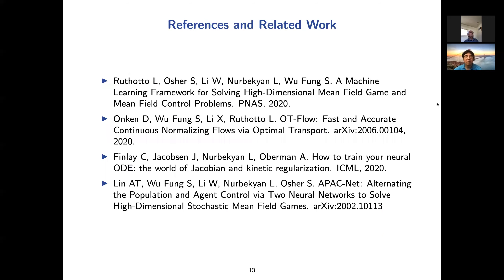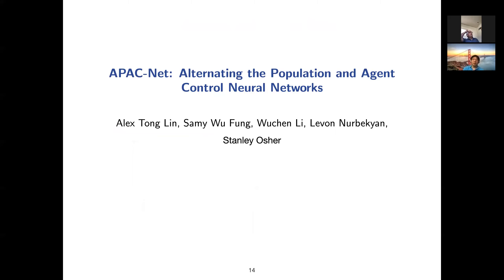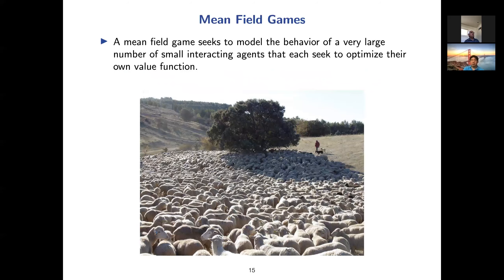This is joint work with many people, most attached to UCLA. The next problem is alternating population and agent control networks. The lead author is Alex Lynn. This brings us back to the beginning: a mean field game models the behavior of a very large number of small interacting agents that each want to optimize their own value function.